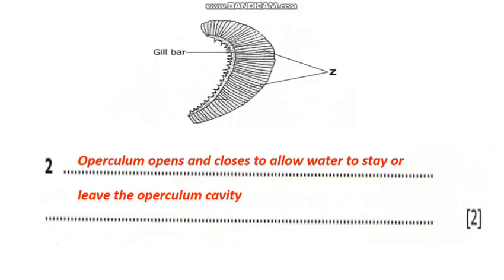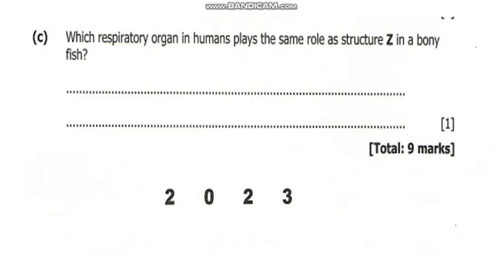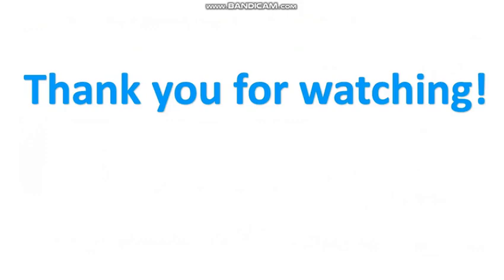Question C: which respiratory organ in humans plays the same role as structure Z in a bony fish? Structure Z — the gill filaments — allows gaseous exchange. The structure that allows gaseous exchange in the human being is the alveolus. So our answer is the alveolus. These were the answers to this question, and we have now come to the end of our biology session. Thank you so much everyone for having time to view this content. This has been your presenter, Mr. Mlenga. Bye bye.